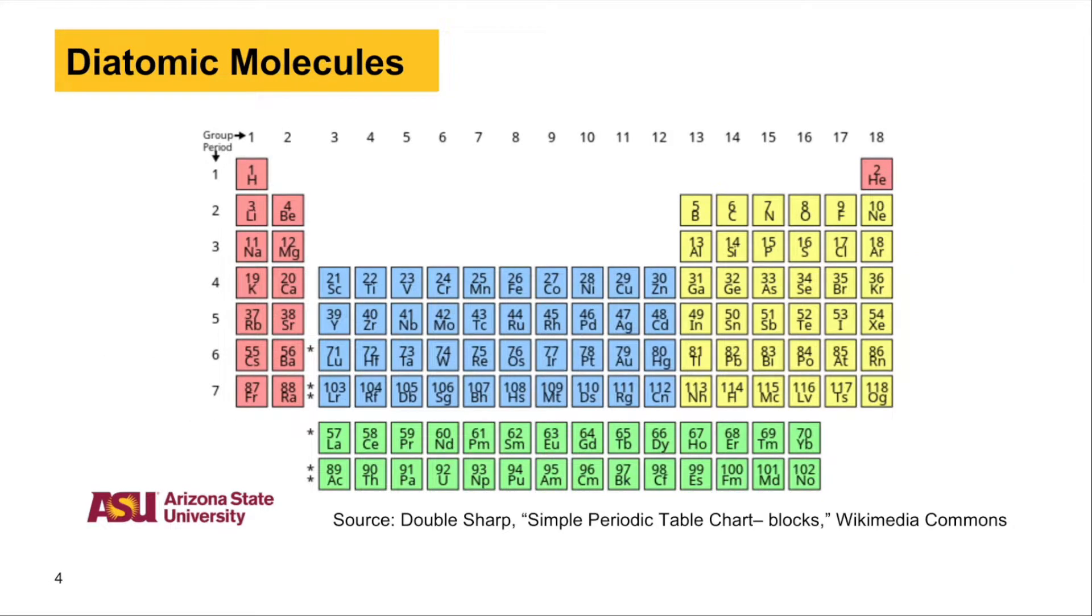Some elements exist as diatomic molecules in standard state. These elements are hydrogen, nitrogen, oxygen, fluorine, chlorine, bromine, and iodine. These elements do not exist as single atoms in their standard state because they're too unstable. Instead, they form diatomic molecules with themselves.